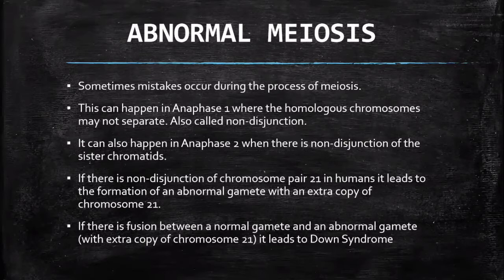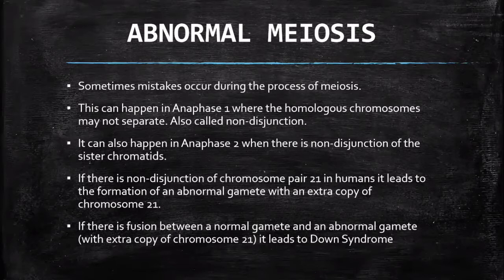Meiosis is not always a perfect process — it might fail. There are certain mistakes that occur during the process of meiosis, and these usually happen during anaphase one and anaphase two. There's a failure during anaphase whereby the chromosomes fail to separate — either the homologous pair fails to separate or the chromatids fail to separate — leading to having extra chromosomes or chromatids in the final cells formed. This process is called non-disjunction.